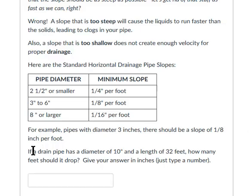Hi everybody, so if we have a drain pipe with a diameter of 10 inches and a length of 32 feet, how many feet should it drop?